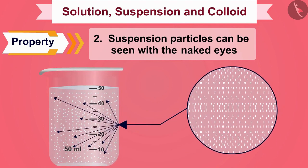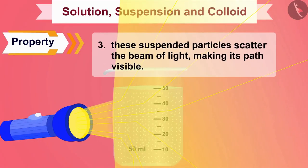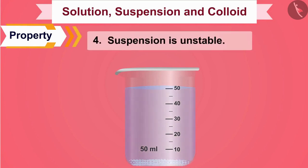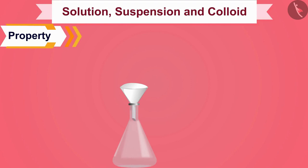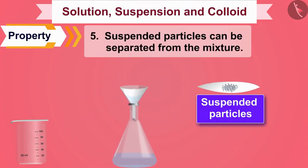Suspension particles can be seen with the naked eye. If we pass a beam of light through this suspension with a torch, we find that the suspended particles scatter the beam of light, making its path visible. Solute particles settle down when left undisturbed — that is, suspension is unstable. Finally, if we filter this suspension with filter paper, we can easily separate the chalk powder from water, so suspended particles can be separated from the mixture.